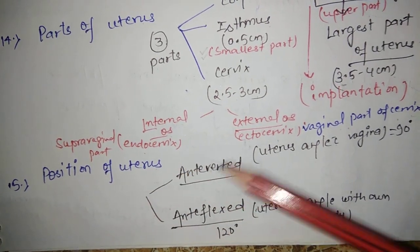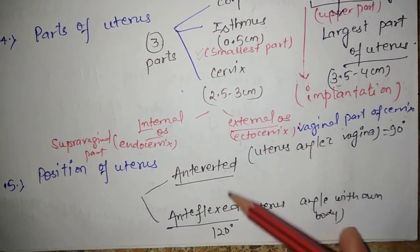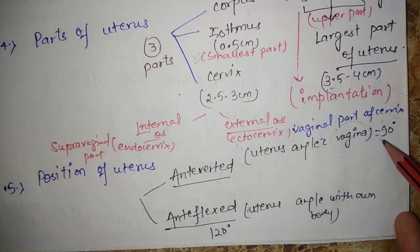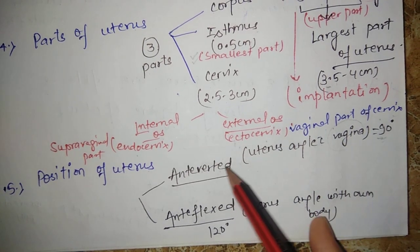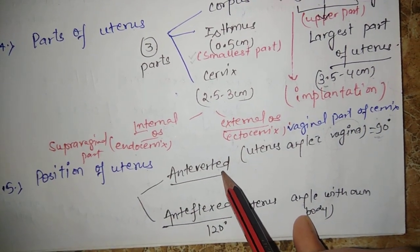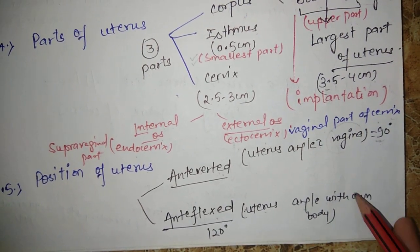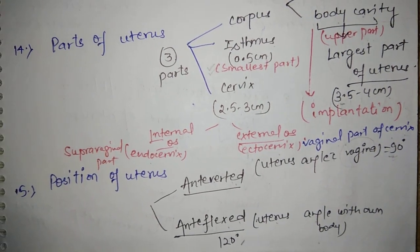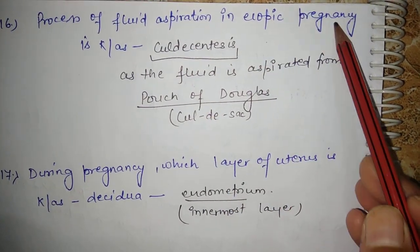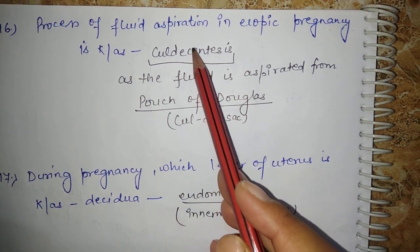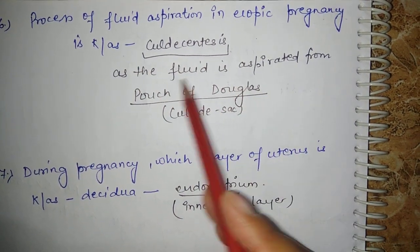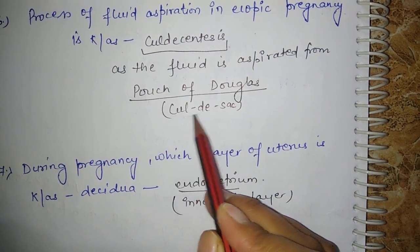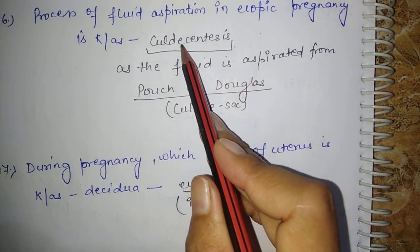The position of the uterus is anteverted and anteflexed. Anteverted means the angle of the uterus with the vagina is 90 degrees. Anteflexed means the angle of the uterus with its own body is 120 degrees. The process of fluid aspiration in ectopic pregnancy is known as culdocentesis, because the fluid is aspirated from the pouch of Douglas, which is also known as cul-de-sac.